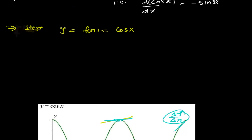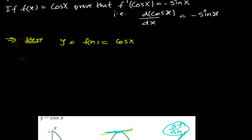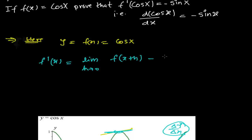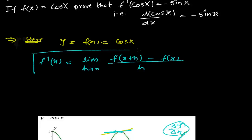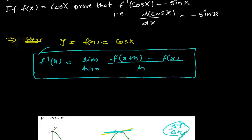Let's start our proof. From the definition of the derivative, what we had learned is that the derivative of the function f(x) is equals to limit h tends to 0, f of x plus h minus f of x, whole divided by h. This we had learned in the previous video. Now, with the same definition of the derivative, we are going to prove that the derivative of cos x is equal to minus sin x. We are going to apply this definition to this function.